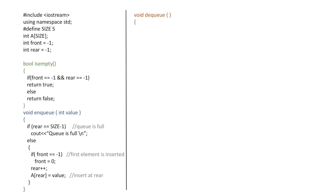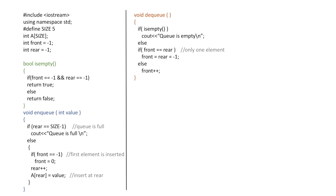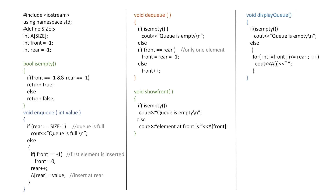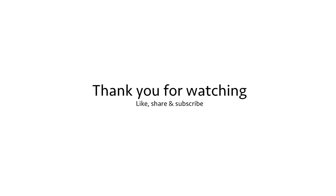Next is our dequeue function. First we check if the queue is empty using isEmpty and print that we cannot remove any element. Else we check if front equals rear, meaning only one element remains, and set both front and rear to -1. Otherwise we simply increment front. Then we write our showFront function: if the queue is empty we print that, otherwise we display the element at front. Our last function displayQueue checks if empty, else runs a for loop from i equal to front to i less than or equal to rear and displays each element. Inside the main function we can perform any operation on the queue. That was all for this video, thank you for watching.